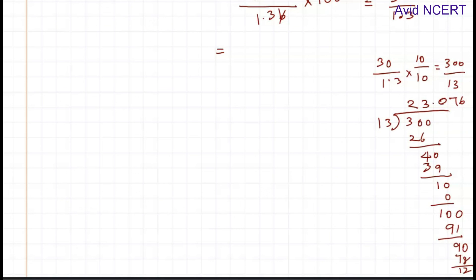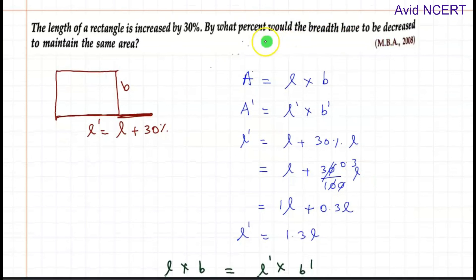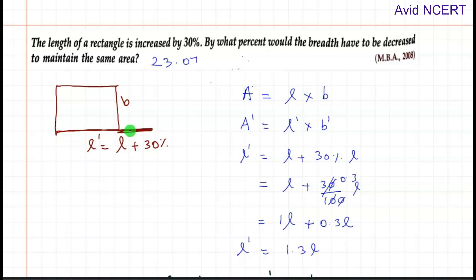The percentage the breadth has to be decreased is 23.076%. So the breadth has to be decreased by 23.076% to maintain the same area. Thanks for watching. If you have any doubts, please let me know in the comments.